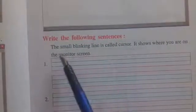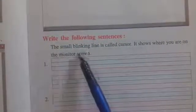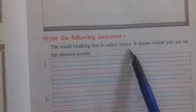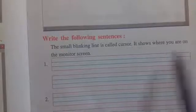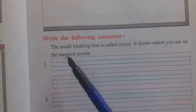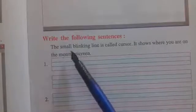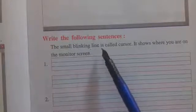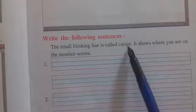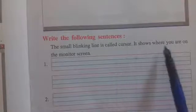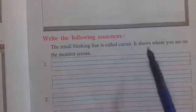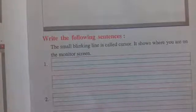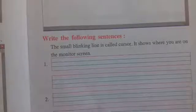Write the following sentences: the small blinking line is called cursor. It shows where you are on the monitor screen. जो आपके computer में small blinking line होती है, उसको cursor कहते हैं। वह दर्शाता है कि आप computer में कौन सी जगह पर हो।